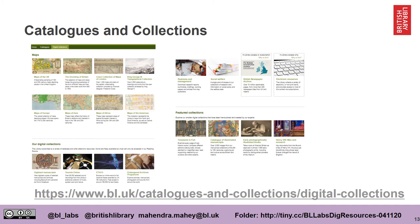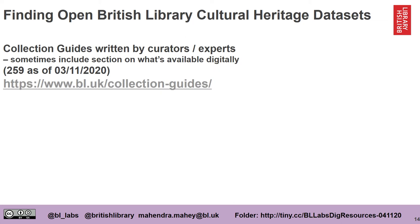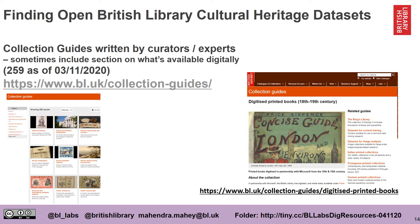This link also provides a link to useful resources that are made available digitally through the British Library. Another way to find digital collections is via collection guides, which are written by curators and experts. As of the 3rd of November 2020 there are 259 of them. They offer a subject journey through our collections and often have a section on what's available digitally. Here's an example of a collection guide written about digitised books from the 18th and 19th century — about 65,000 of them, which are made available for anyone to use freely.